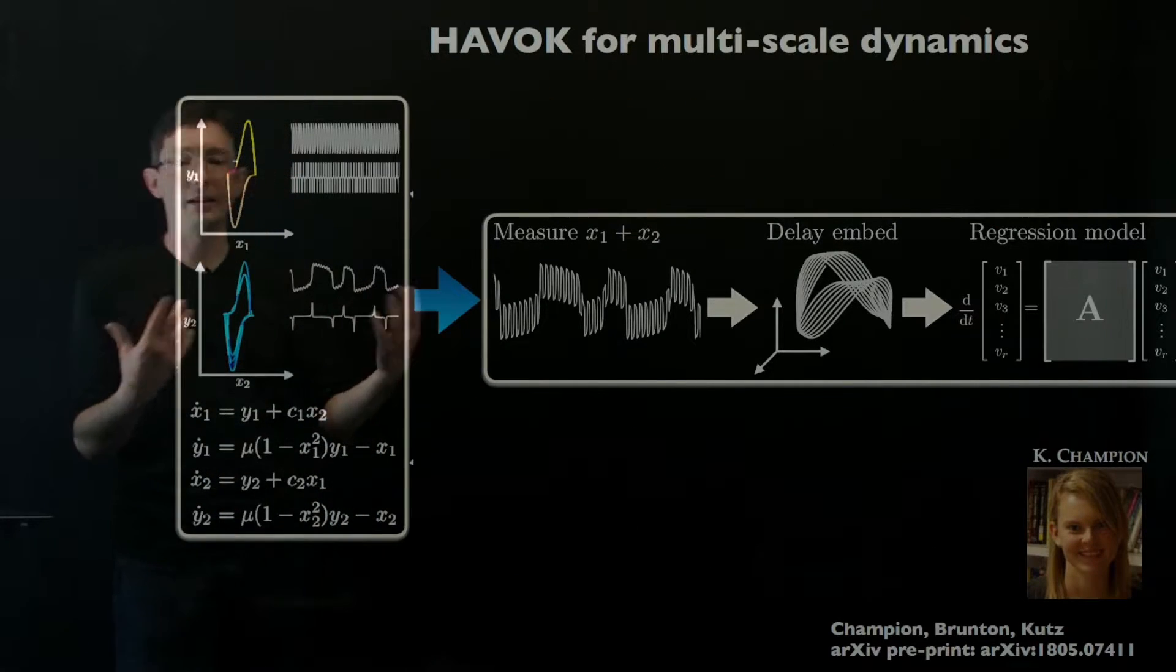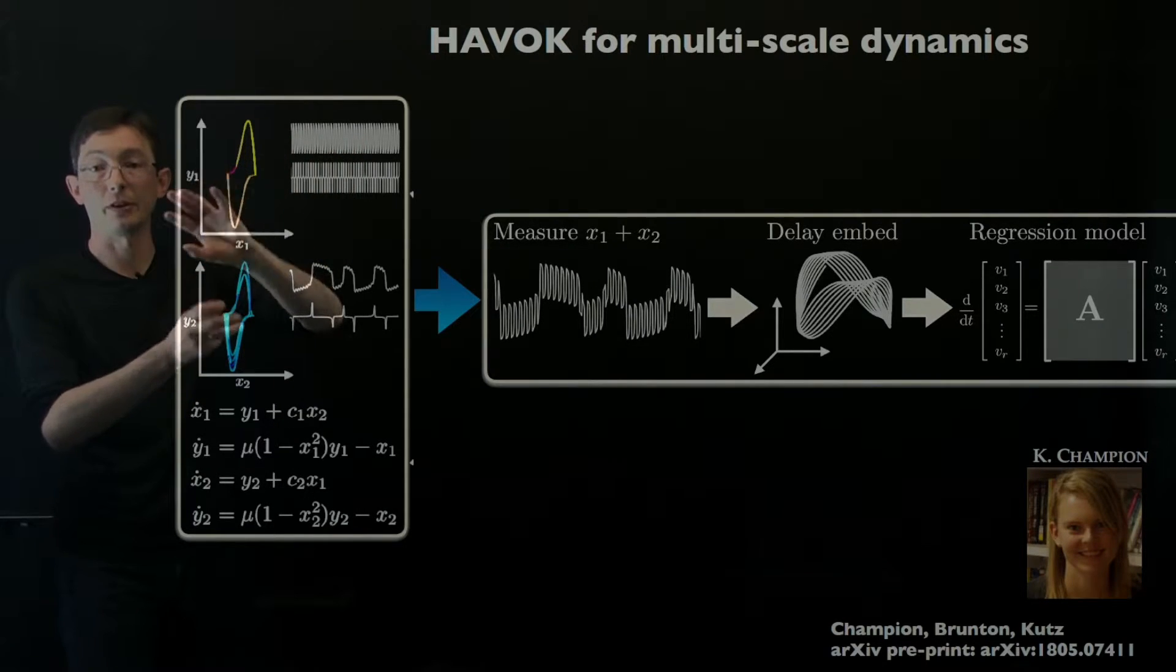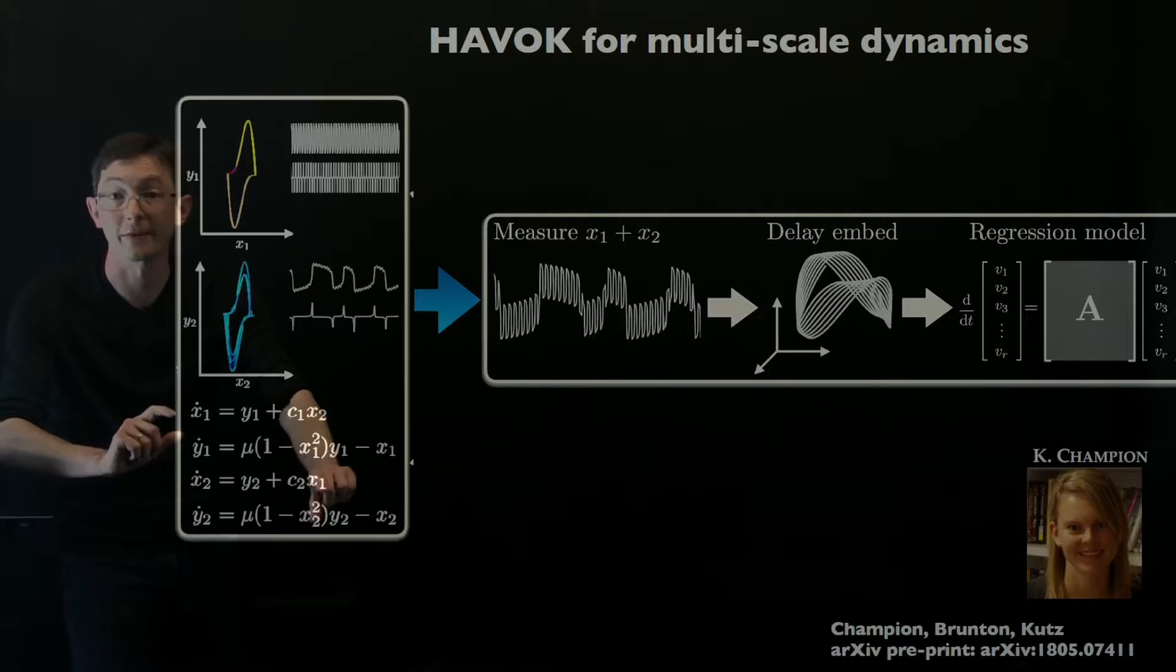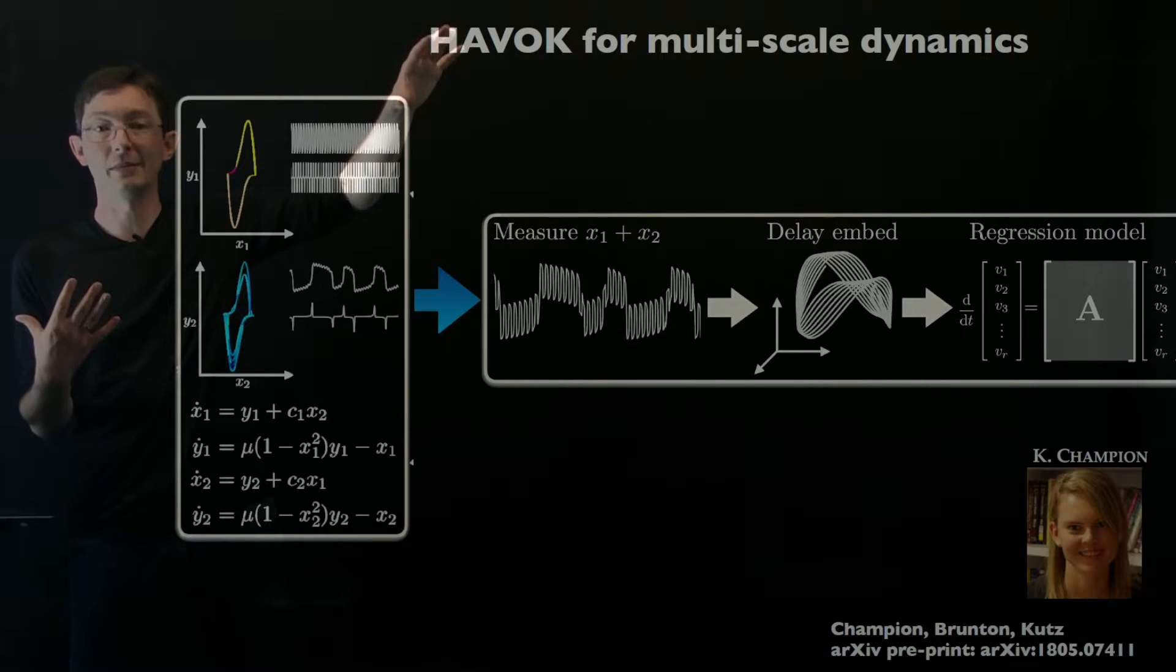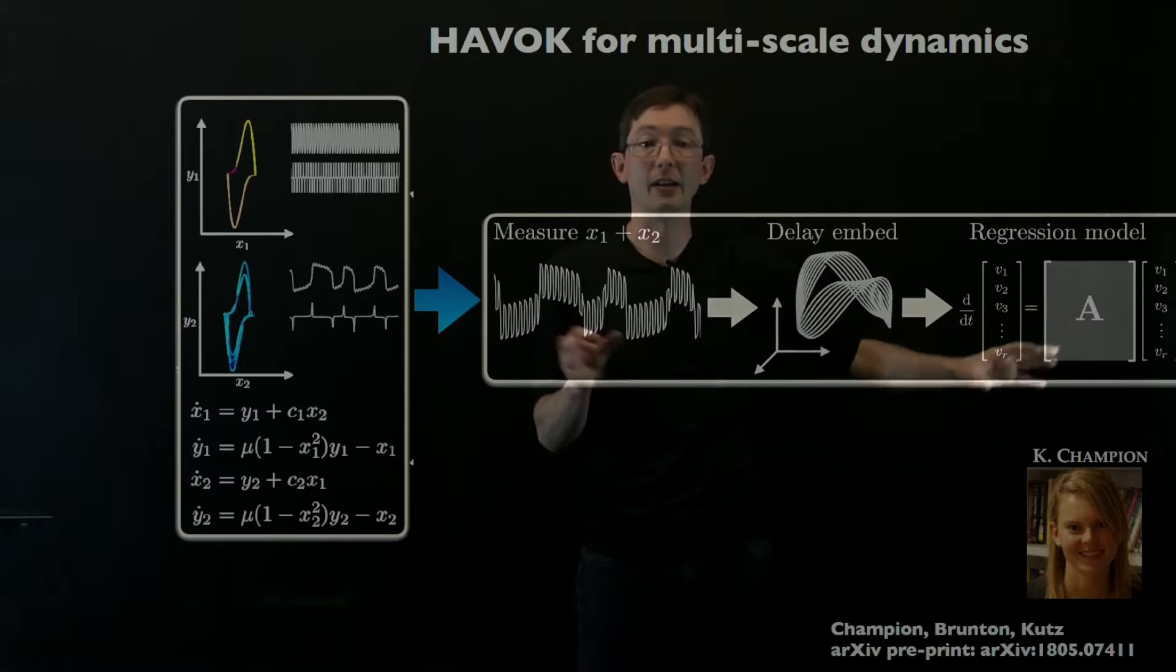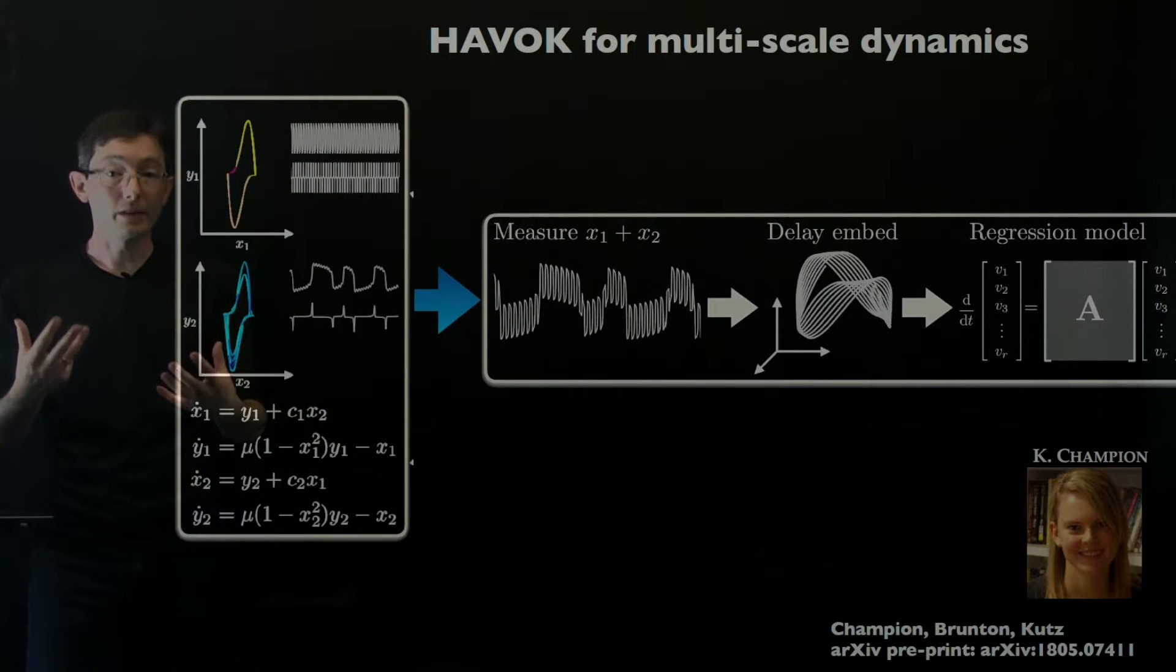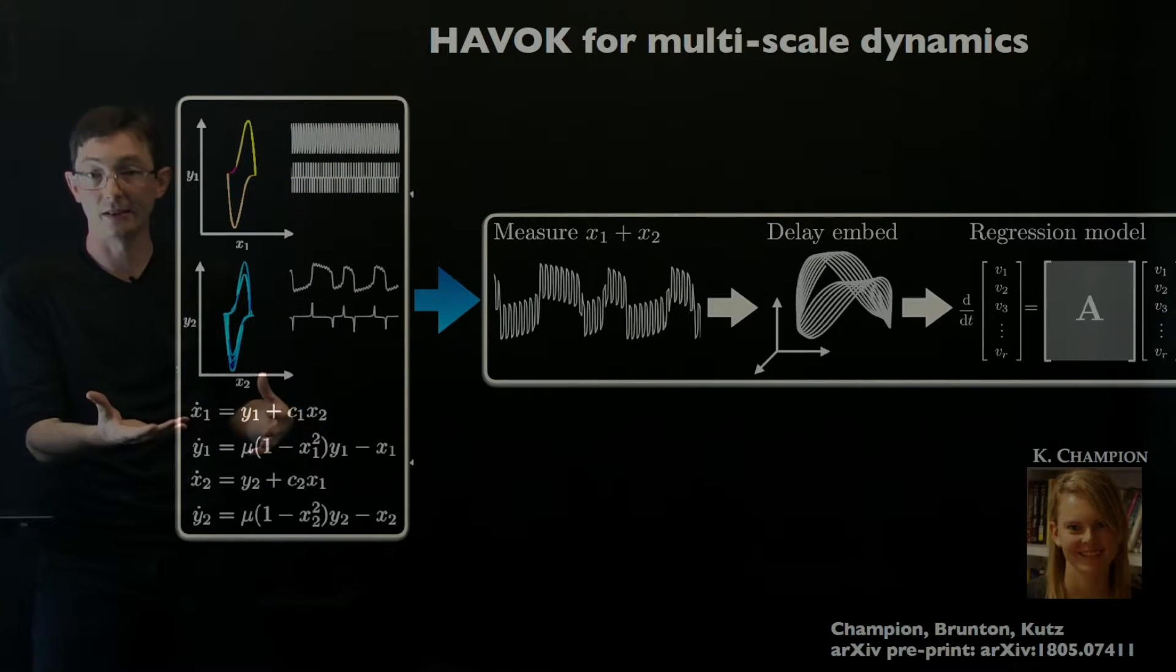And then, like I said, she's also applied this to systems that have a very different separation of timescale. So I have one van der Poel oscillator that's slow, another van der Poel oscillator that's fast, and they're coupled. And essentially what she's doing are these data-driven Koopman-based methods to pull out, to tease out the timescale separated dynamics from measurement data. So from limited measurement data, in this case she's not measuring everything, she just has x1 plus x2. So this is definitely a step towards moving Koopman methods towards multi-scale systems.